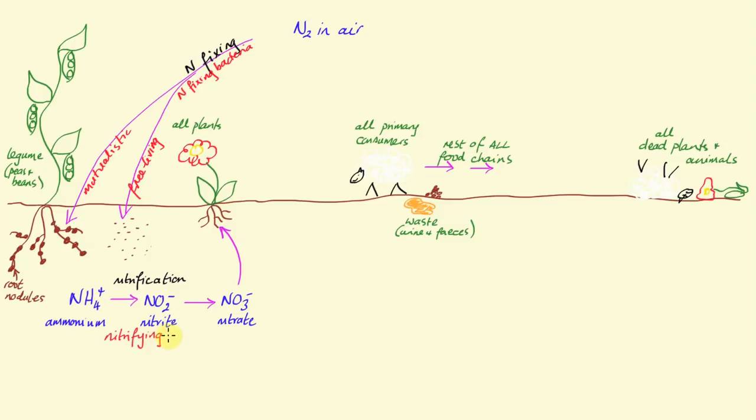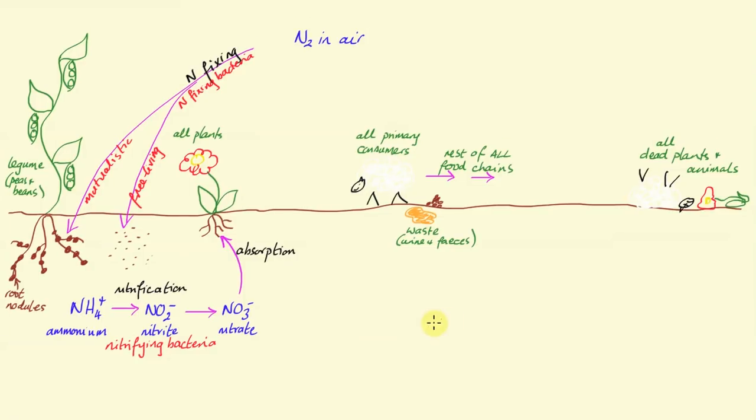Here is the crucially important bit, the absorption of nitrate ions by plants. This absorption is how nitrates get into producers so that they can make proteins, DNA, RNA, ATP. Remember that ATP is a derivative of an RNA nucleotide, and all other nitrogen containing compounds. This is how nitrogen enters every food chain on the planet.